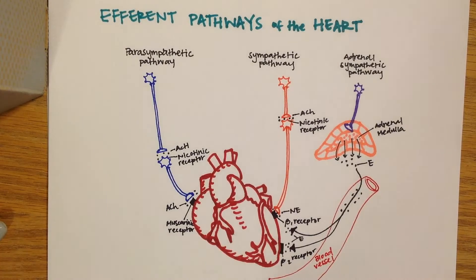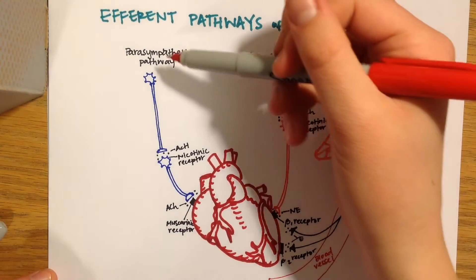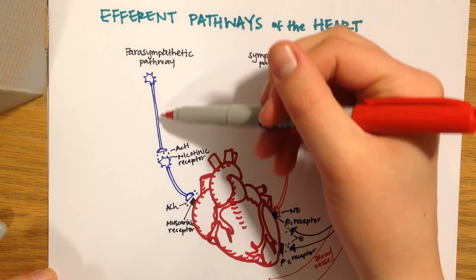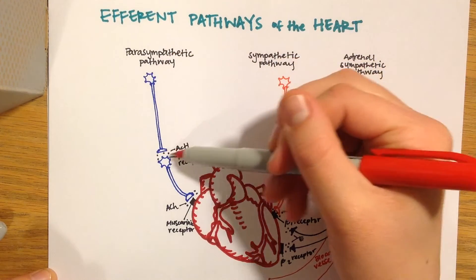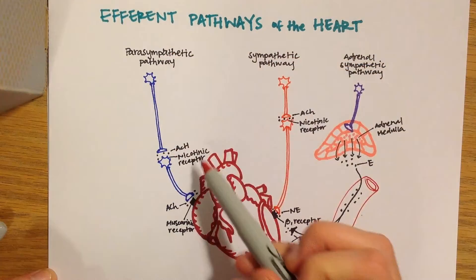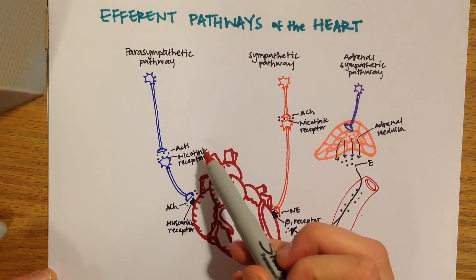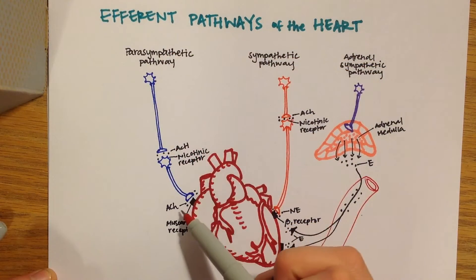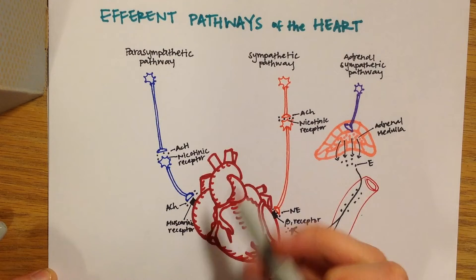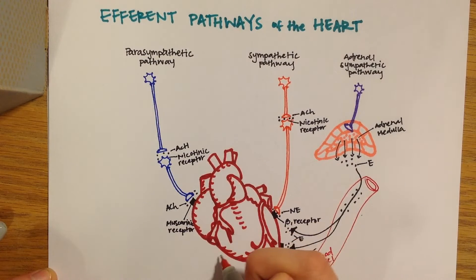To go to a broader picture of things, let's look at the efferent pathways of the heart that bring electrical signals to the myocytes. There are three different types of these autonomic signaling pathways that regulate the heart: one is parasympathetic, and the other two are sympathetic pathways.